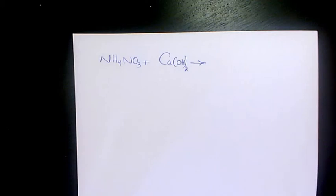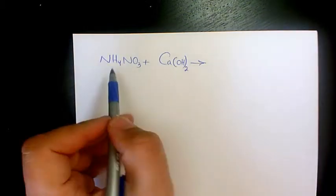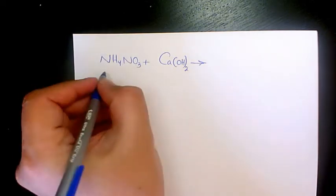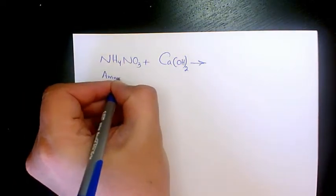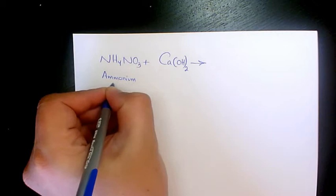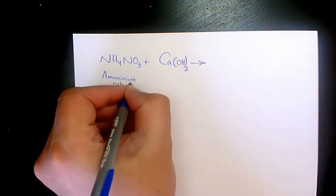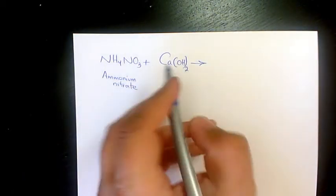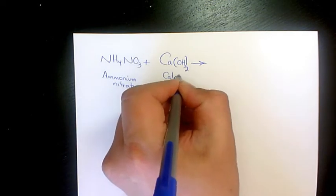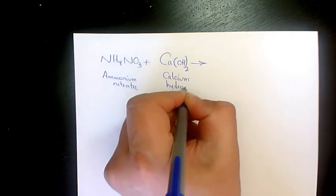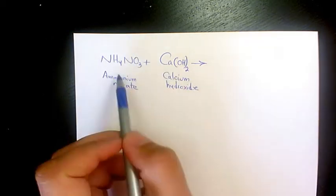What's up guys, this is Massey. Welcome to another video. In this video I want to talk about the reaction between ammonium nitrate and calcium hydroxide. NH4NO3 is ammonium nitrate and Ca(OH)2 is calcium hydroxide.